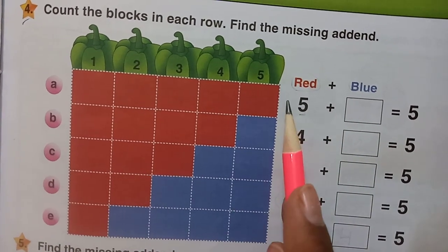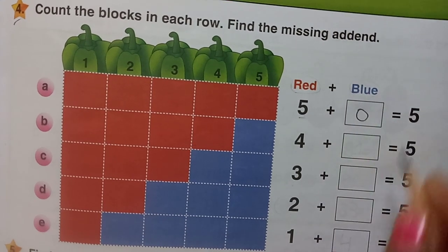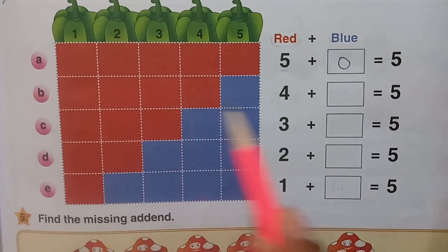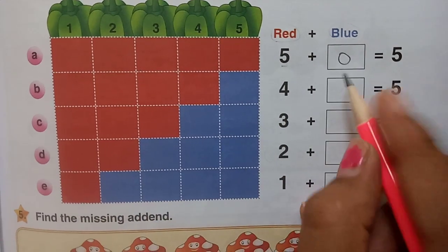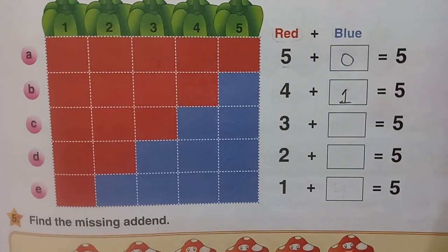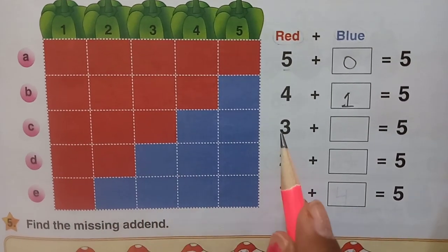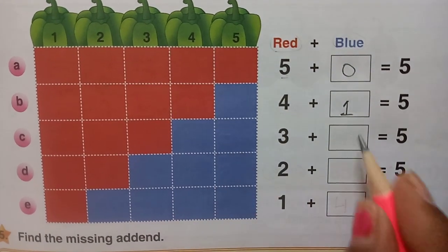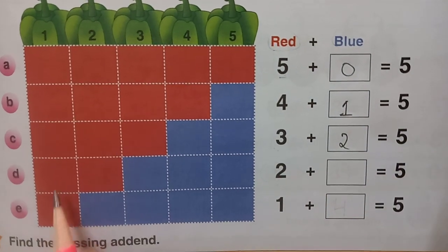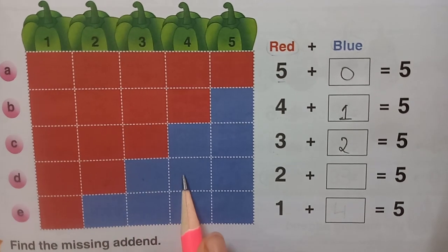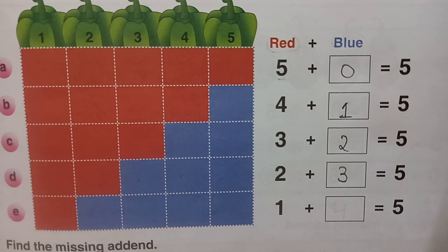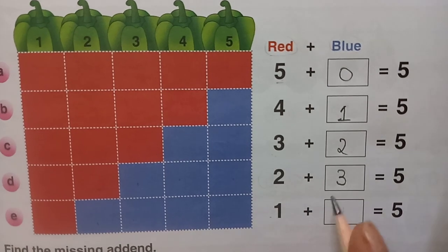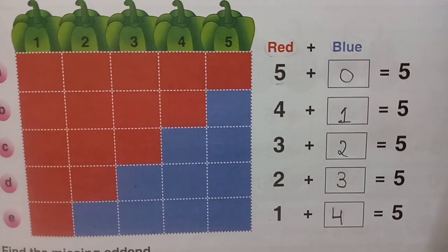How many blue blocks are there? No blue blocks — 0 blocks. Next row: how many red blocks? 1, 2, 3, 4 — four red blocks, and only one blue block. Next: 1, 2, 3 — three red blocks. Then how many blue blocks? 1, 2. So 3 plus 2 equals 5. Next: only 2 red blocks, and 3 blue blocks. At last, only one red block, and the remaining 4 blue blocks — this is our missing addend.